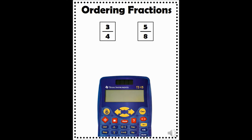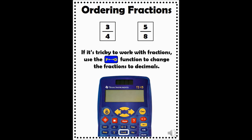Another way to work with fractions in your calculator is to change them to decimals. This may be helpful when ordering or comparing fractions. Sometimes when you are struggling to order or compare fractions, it is helpful to change them to decimals, then compare the decimals. You can change a fraction to a decimal or a decimal to a fraction by using the F to D button in the top middle of your calculator. Enter the fraction into your calculator, press enter to move the fraction to the right side of your display, then press the F to D button. Take a look at the two fractions here — three-fourths and five-eighths. Try changing them to decimals to see if it's easier to decide which one is larger.